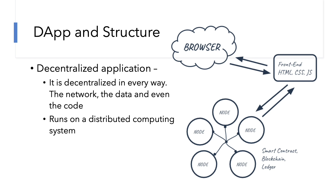Let's take a quick look at what a dApp is and its structure. A dApp is a decentralized application, and it is decentralized in every way. The network is decentralized because it is peer-to-peer. The data is decentralized because it is shared across devices in the network. The code is also decentralized because it is shared and executed across the devices in the network.